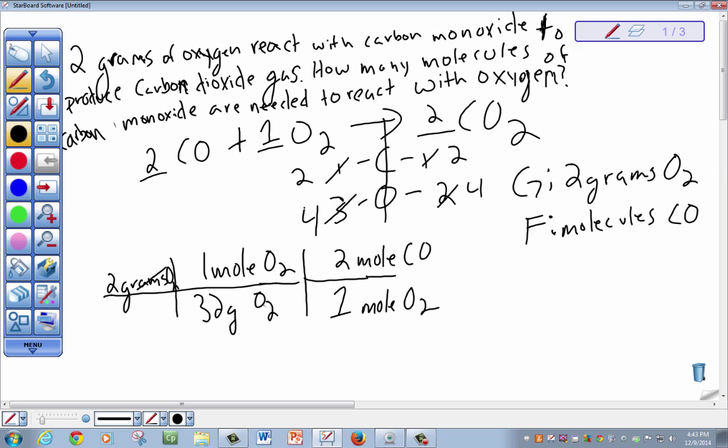So as we cancel the dimensional analysis out, grams of oxygen cancel out with grams of oxygen, moles of oxygen cancel out with moles of oxygen, and we're left with moles of carbon monoxide.